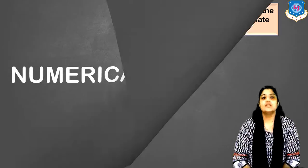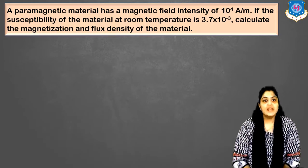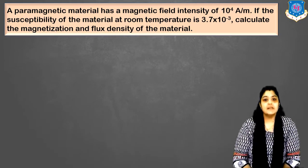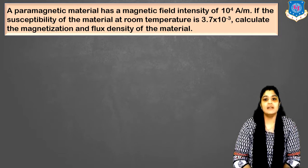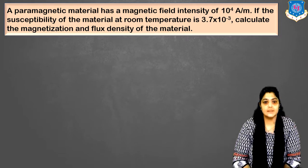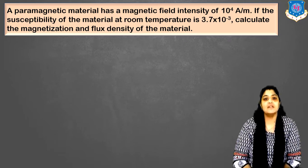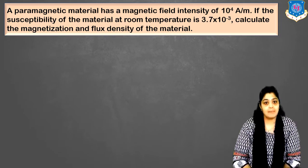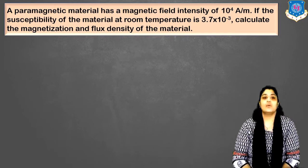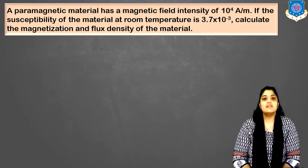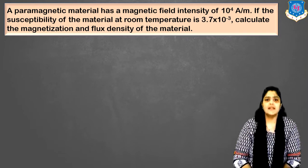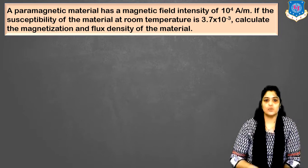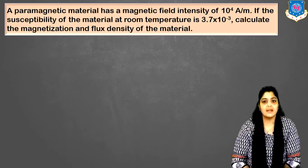Let's start with the first numerical. A paramagnetic material has a magnetic field intensity of 10 raised to 4 ampere per meter. If the susceptibility of the material at room temperature is 3.7 into 10 raised to minus 3, you have to find out magnetization M and flux density. A paramagnetic material has permanent dipoles but the net dipole moment in the absence of a field is zero.